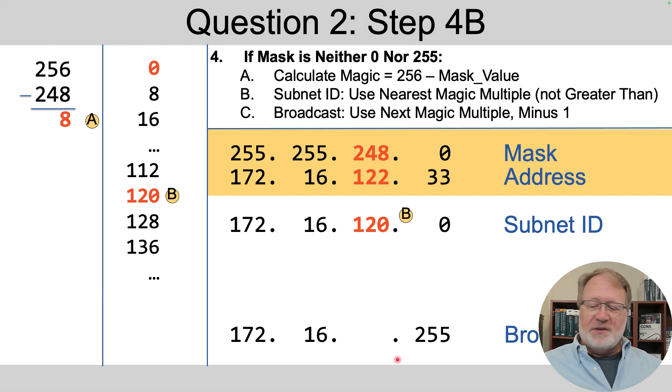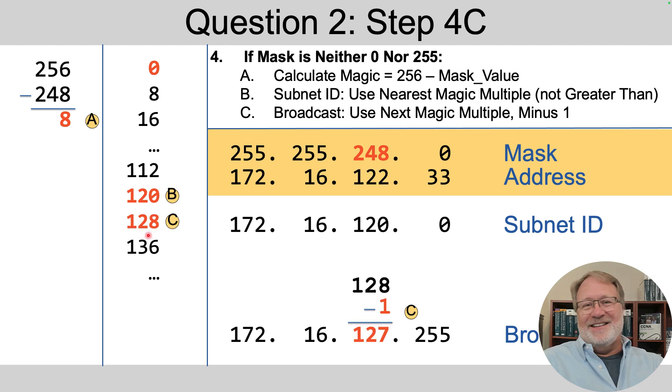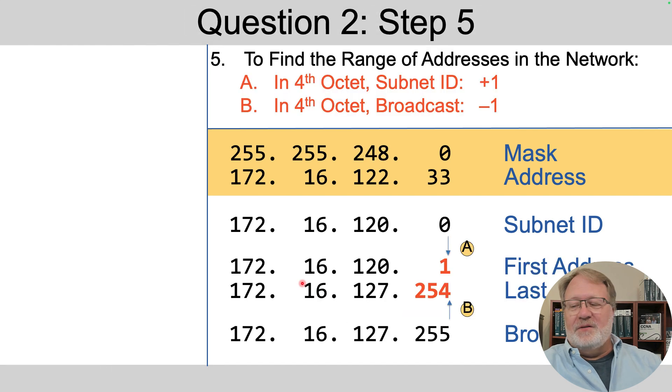To find the subnet broadcast address, it's the next multiple, this 128. So now it's highlighted in the next slide and it's 128 minus one or 127. So it's not the next multiple, it's the next multiple minus one or 127 in that octet. So now you've got the subnet broadcast address.